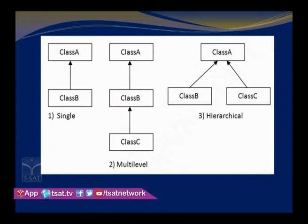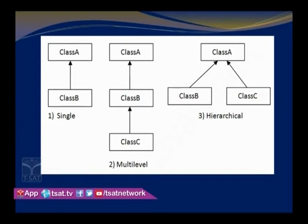In multi-level inheritance, we have three classes: A, B, and C. Class B is derived from class A, and class C is a subclass of class B. When one subclass becomes a superclass for another class, we call it multi-level inheritance. Class B is a subclass of A, but for class C, class B becomes the superclass — the subclass is now becoming a superclass for class C.